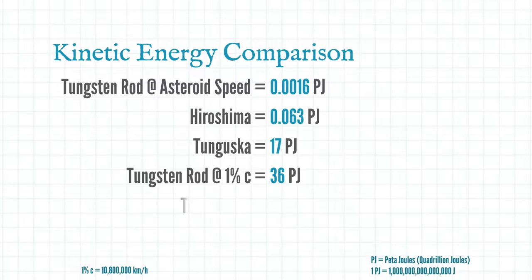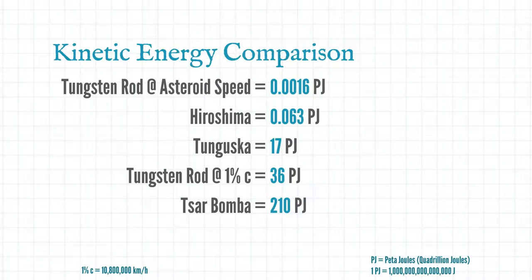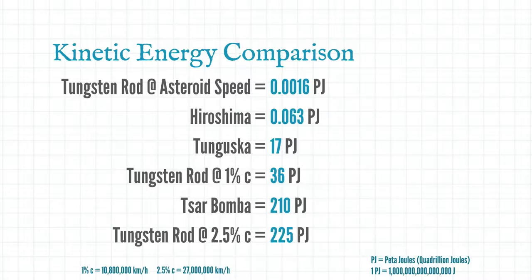The next thing we can compare it to is Tsar Bomba, which is the most powerful nuclear weapon ever created. It was tested in 1961 and put out an enormous 210 petajoules of energy. So how do we compete with that? Well all you've got to do is fire your tungsten rod at two and a half percent of the speed of light and you get 225 petajoules.